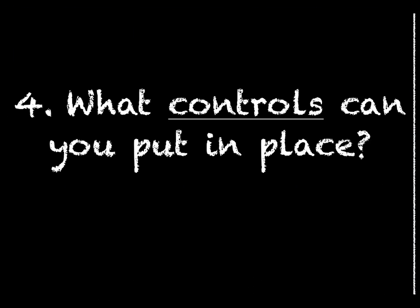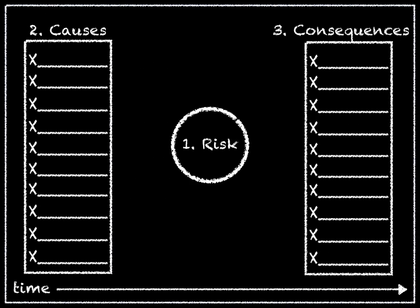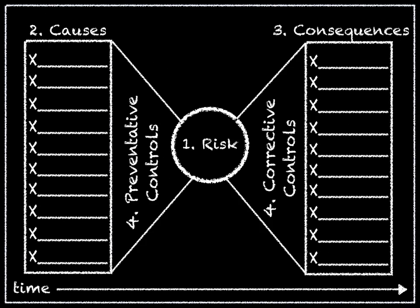Step 4: What controls can you put in place? Controls allow you to actively manage your risk. They can increase the likelihood of the risk occurring if it is a positive risk, or act as a barrier to the risk occurring if it is negative. Controls between the causes and risk focal point are termed preventative controls, whilst controls between the risk focal point and the consequences are termed corrective controls.